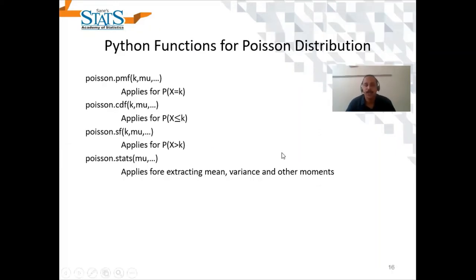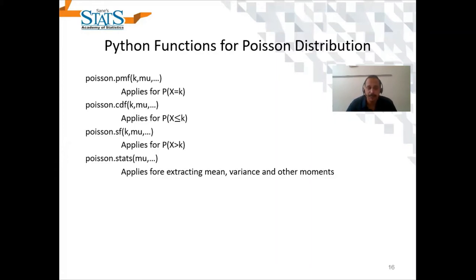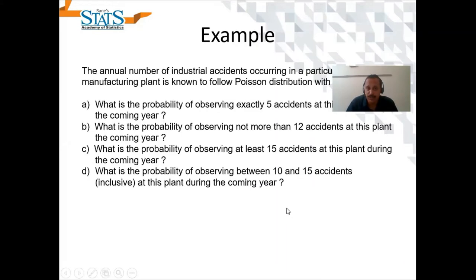There is a Poisson module in scipy, and in that module we have different functions: the PMF function, CDF function for cumulative distribution function, SF which is exactly opposite of CDF, and one more function called stats which gives you the moments of the Poisson distribution. Let us see one numerical example related to Poisson distribution.